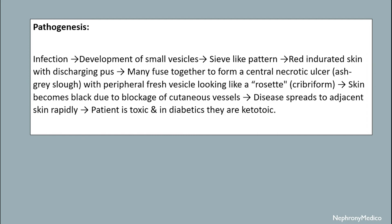Pathogenesis of carbuncle: when there is infection, small vesicles develop in a sieve-like pattern. There is red indurated skin with discharging pus. These many foci come together to form a central necrotic ulcer with peripheral faces looking like a ridge. The skin becomes black due to blockage of cutaneous vessels, and the disease spreads to adjacent skin rapidly. The patient is toxic, and in diabetics, they are ketoacidotic.